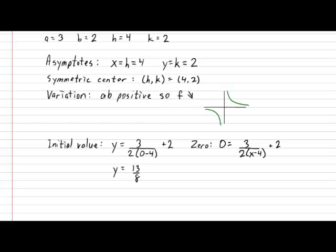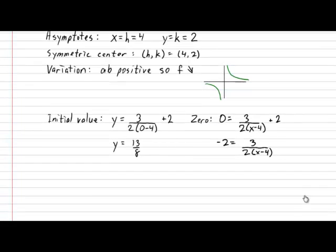So, relying on our normal algebra, we get negative 2 is equal to 3 over 2 times x minus 4. Doing our distribution on the denominator, we get negative 2 is equal to 3 over 2x minus 8.